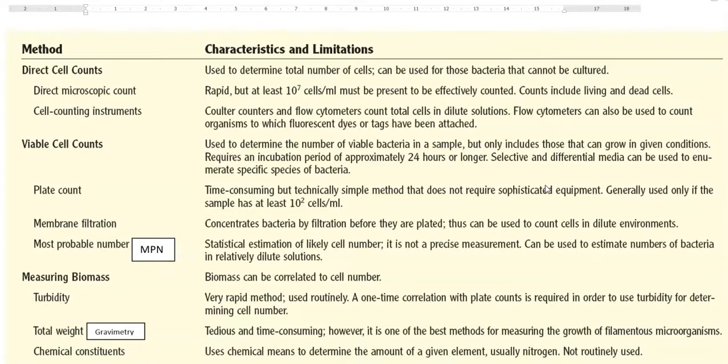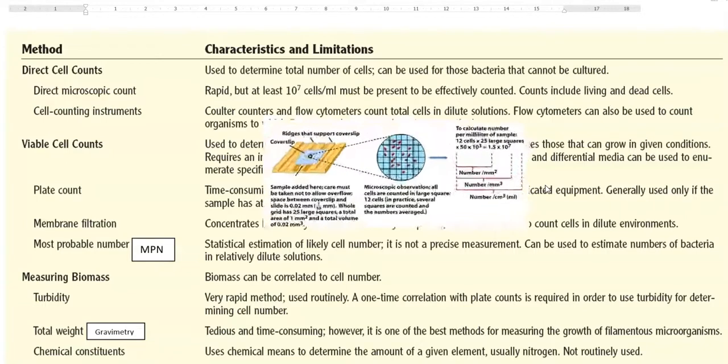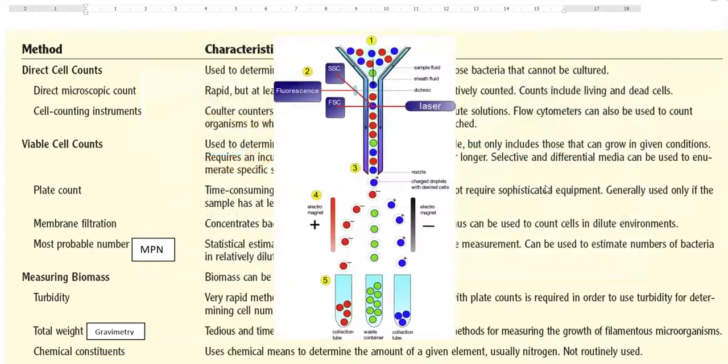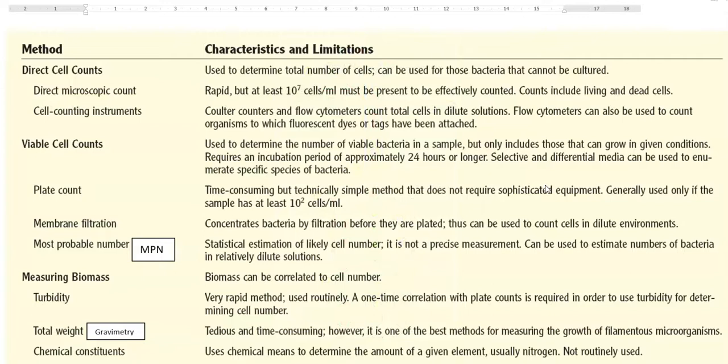The next direct cell counting method is counting using certain instruments. Here, two instruments are commonly employed. One is the coulter counter and another one is the flow cytometer that counts the total cells there in the diluted solutions. For example, in flow cytometry, counting is based on linking the fluorescent dyes or tags to the organisms.